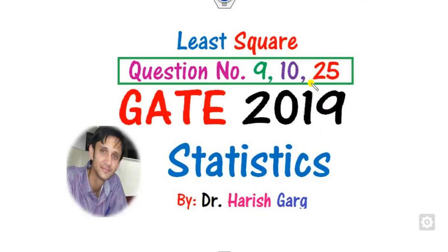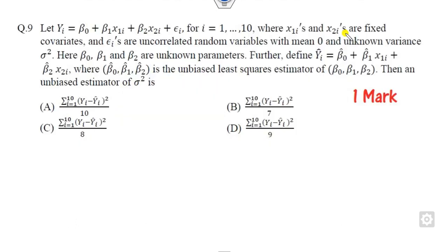Hello students, welcome to the next lecture on the GATE 2019 statistics exam. Today we will see three questions — 9, 10, and 25 — which are related to least square estimation. We will see how you can solve these three questions within a given time period.